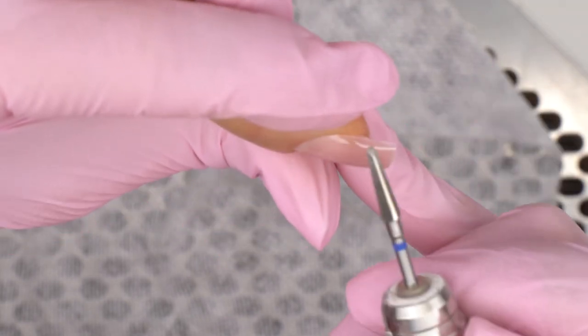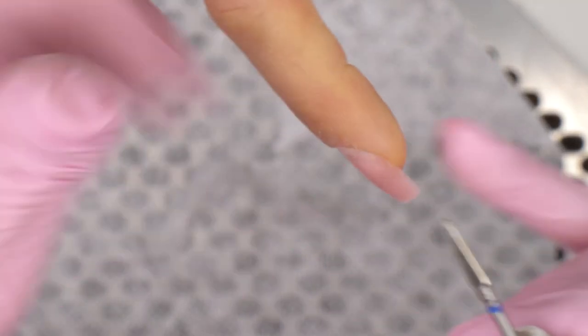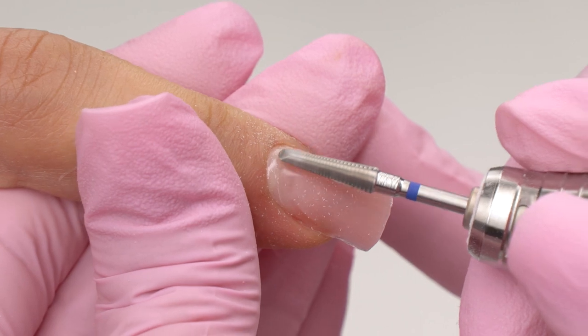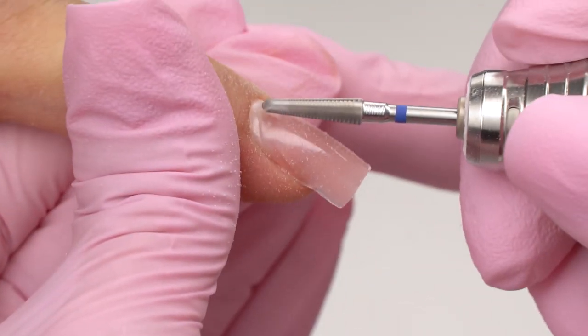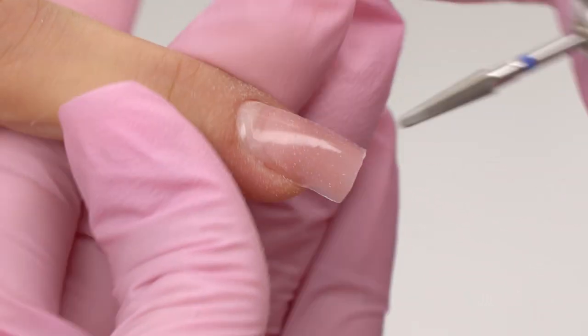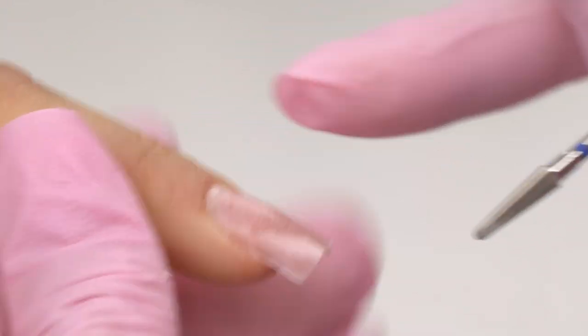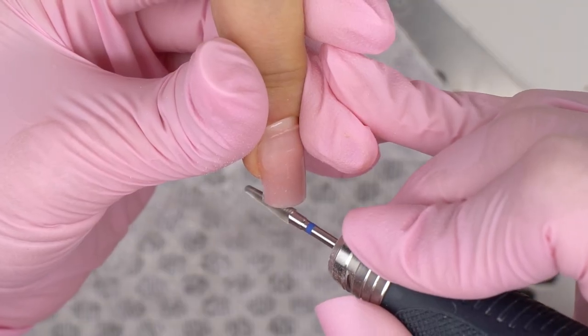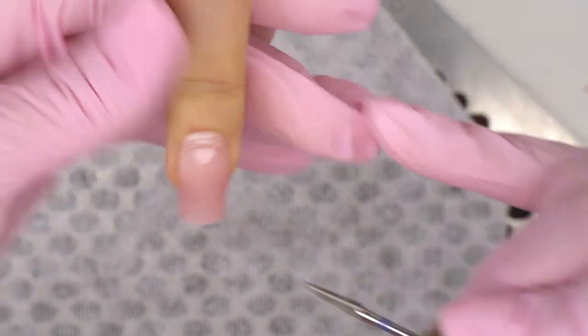From the side view, the nails still look flat. They lack volume in the stress zone on the apex, but I will build it up later. Using either a gel or a base coat.